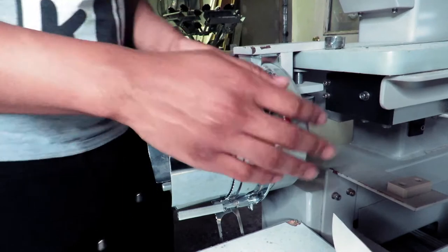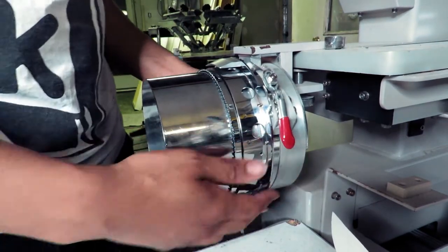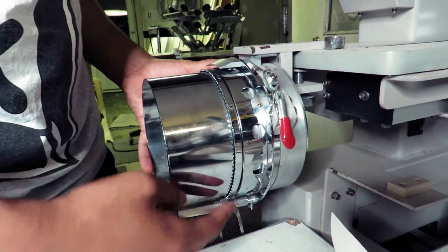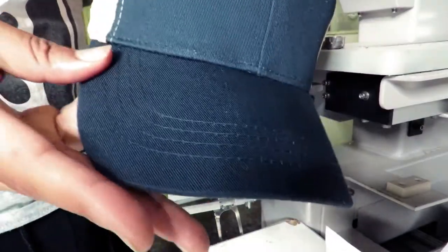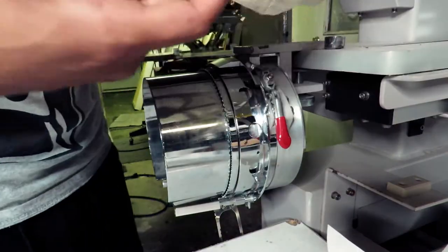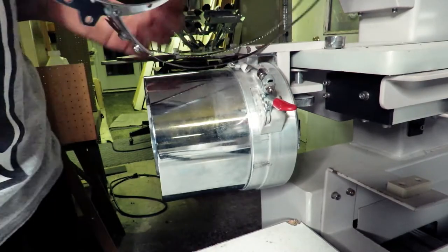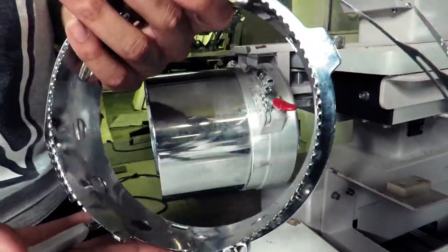Hey guys, Dwight here at Sew Hippie and today in this video we are going to be teaching you how to hoop a hat and prep it for embroidery. So we have our hat here and here we have our hoop that the hat is going to go on.